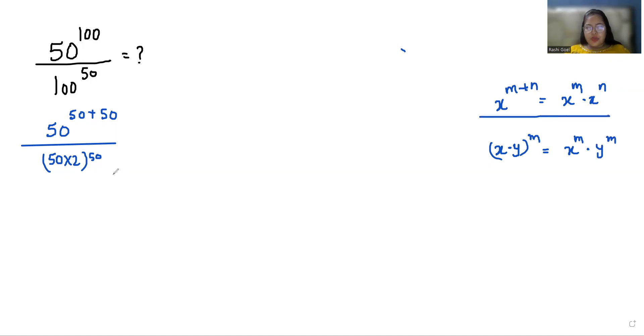So in the numerator I'm going to apply this rule: 50^50 × 50^50. By, now in the denominator I'm going to apply this rule: 50^50 × 2^50.